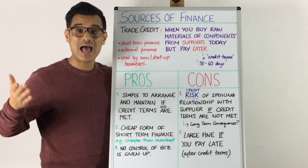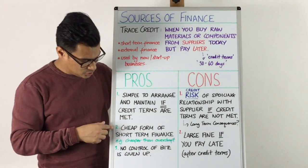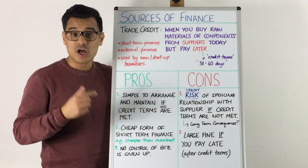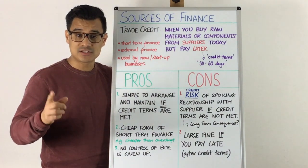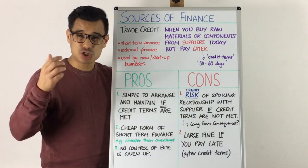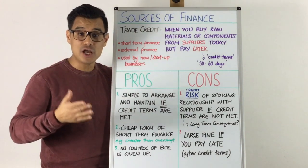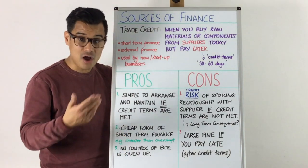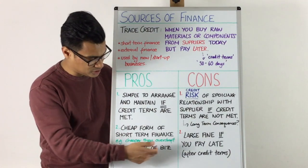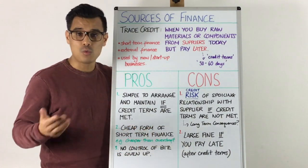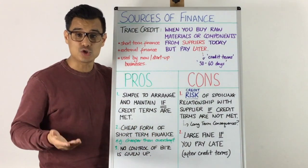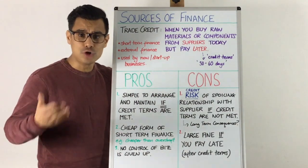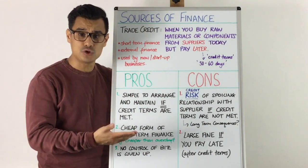Number two: it's a cheap form of short-term finance. It's usually cheaper compared to alternatives like an overdraft, where you typically pay quite high interest rates. Thirdly, you give up no control in your business when using trade credit — you keep 100% ownership, and nothing is taken from you in that respect.